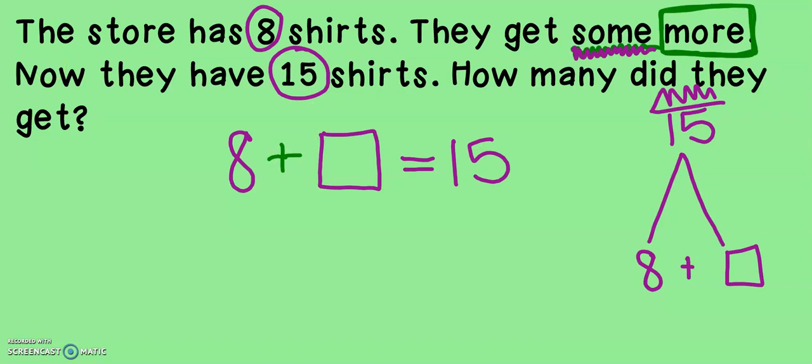There are a few ways to figure this out. One way is to subtract. I could start at 15 and count down eight spots. Or I can start at eight and use my counting up strategy. I think I'm going to count up. I'm going to start at eight and keep going. Eight, nine, 10, 11, 12, 13, 14, 15. How many did I add?